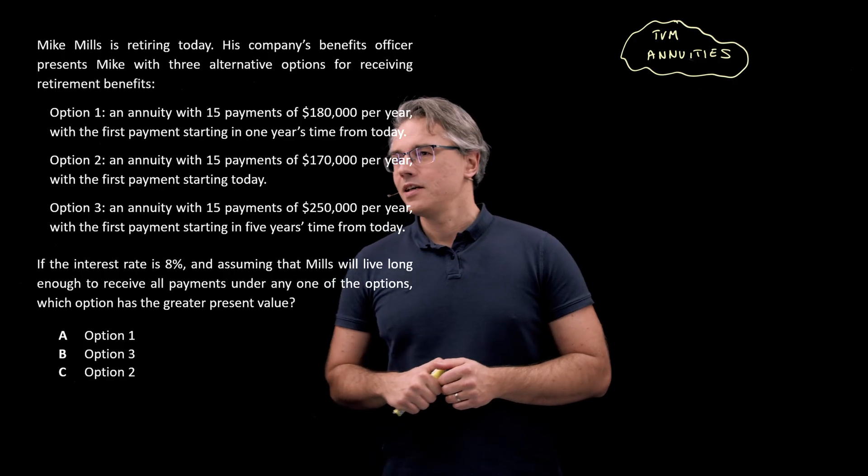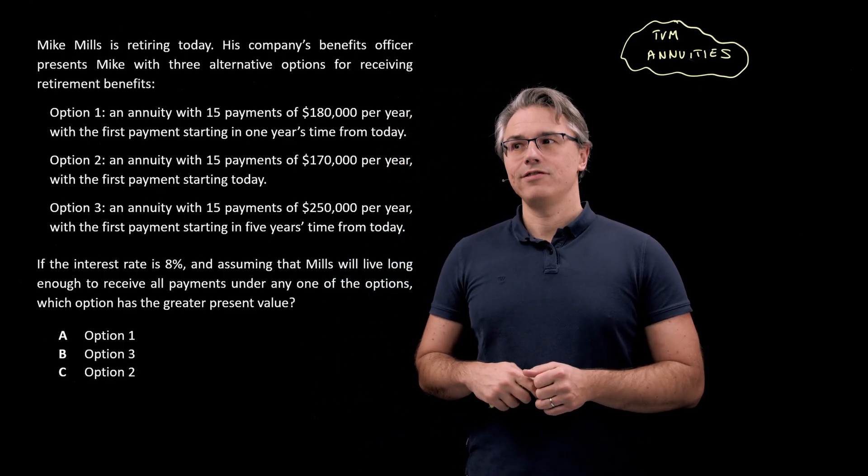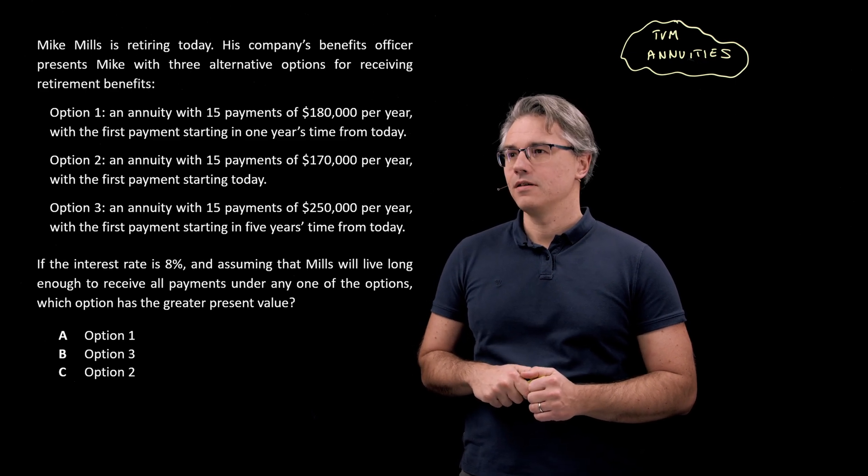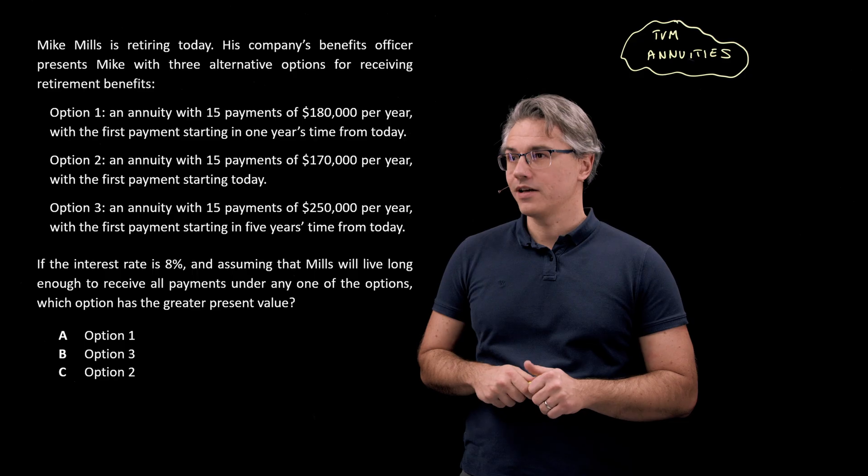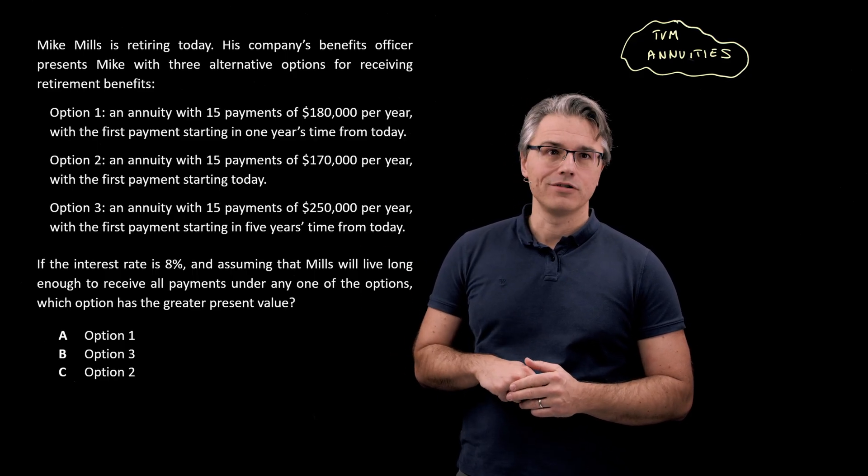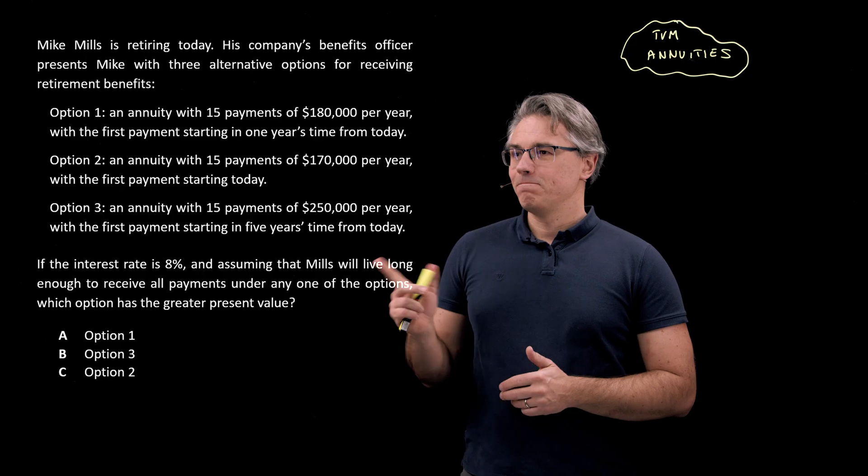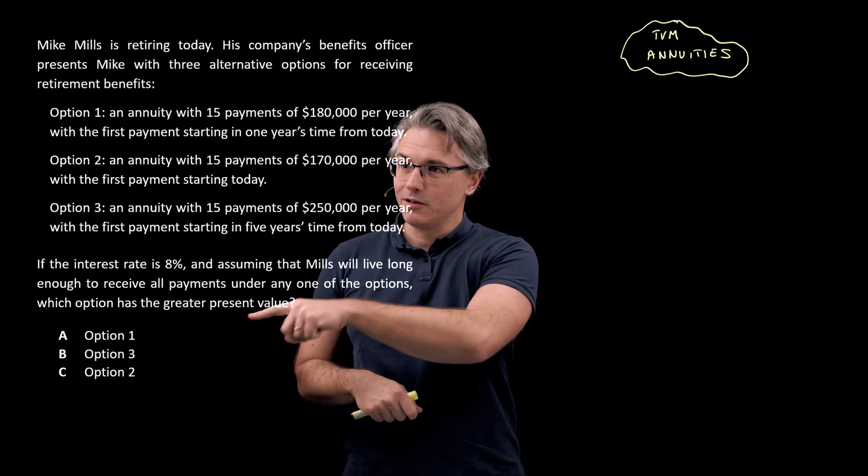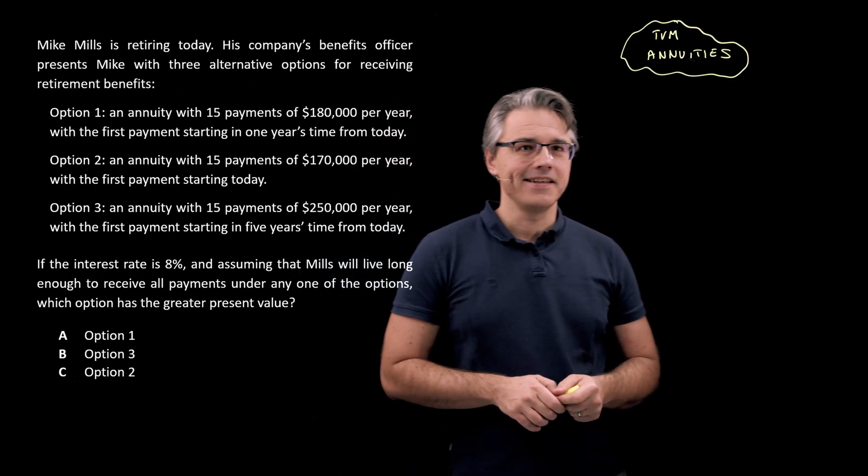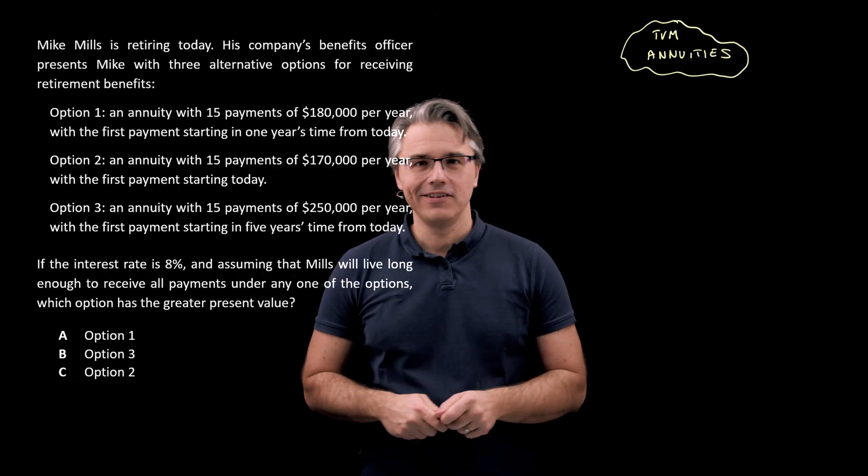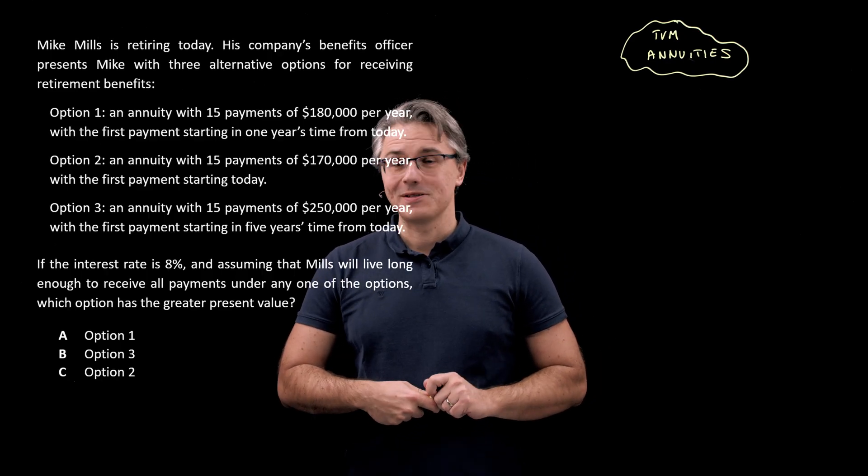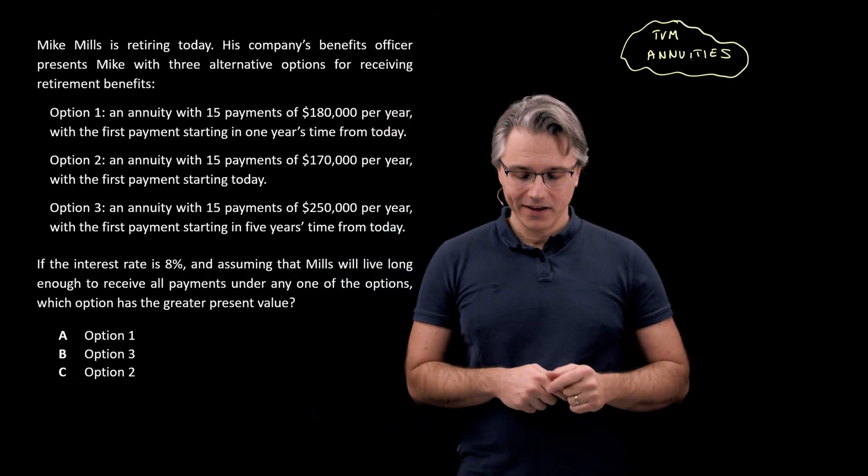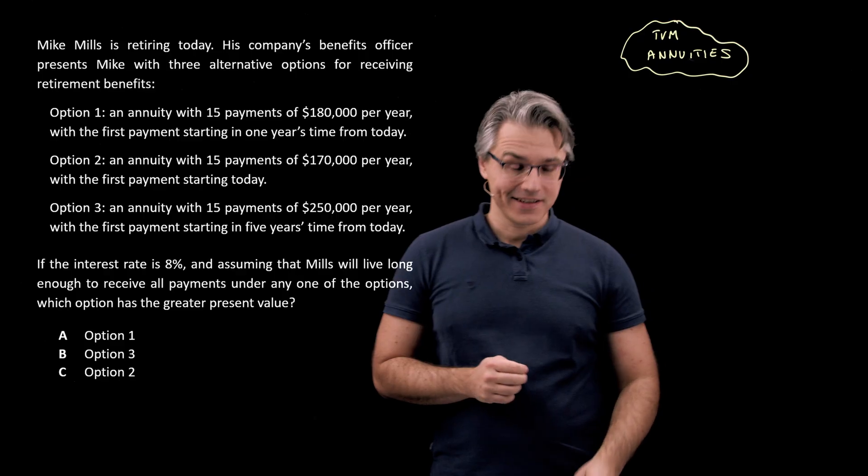If the interest rate is 8% and assuming that Mills will live long enough to receive all payments under any one of the options, which option has the greatest present value? Option one, option three, or maybe option two. Notice that I intentionally changed the order in which the options appear in the answers just to potentially trick you. Be ready for such a thing in the exam.